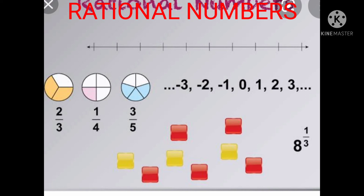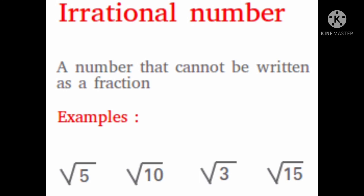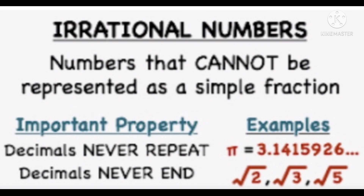Observe the rational numbers set. In this set, some diagrams are there. Numbers in fraction form such as two by three, one by four, three by four, and five are all rational numbers. Negative integers like minus three, minus two, minus one, zero, one, two, three are also rational numbers. Next, the definition of irrational numbers: a number that cannot be written as a fraction is called an irrational number — for examples, root 5, root 10, root 3, and root 15. Irrational numbers cannot be represented as a simple fraction.